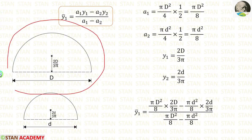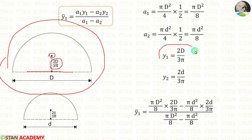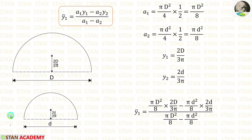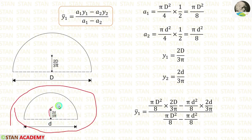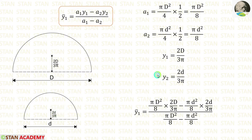For the outer half circle, the distance of centroid from the equal area axis is 2D by 3pi. So y1 is equal to 2D by 3pi. For the inner half circle also, the formula is the same, but instead of caps D we have to apply small d. So y2 is equal to 2 small d by 3pi.